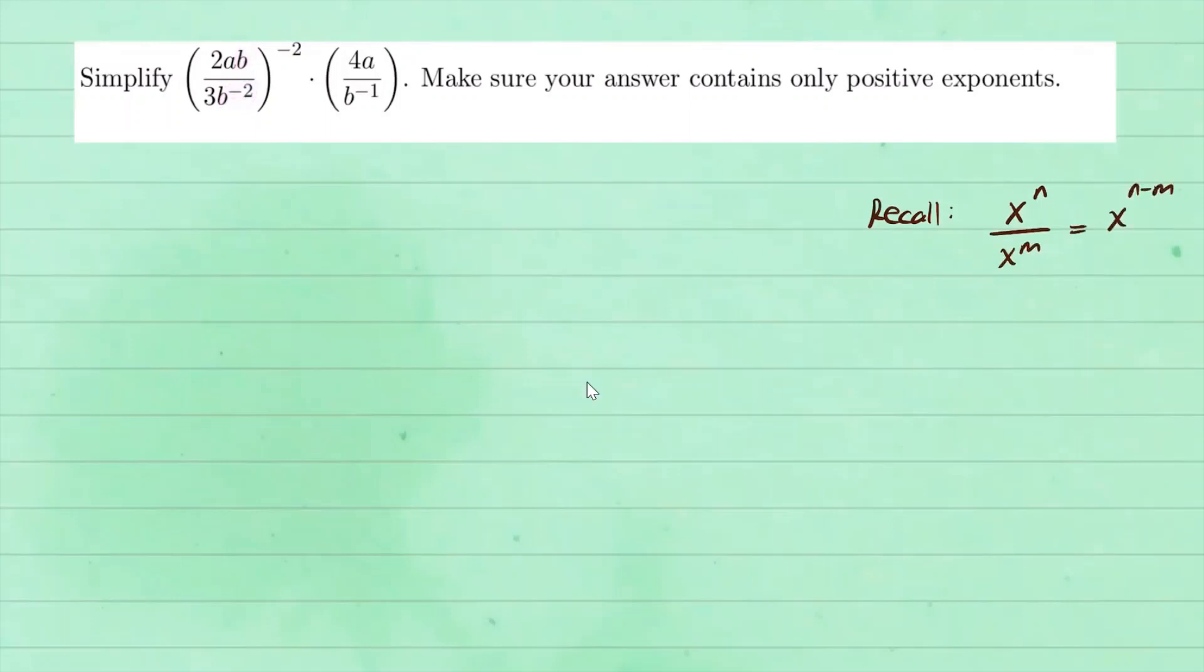So using that rule, we're going to simplify. So this is to the negative second power. We have 2a3. So we have b to the one on top and b to the negative two.